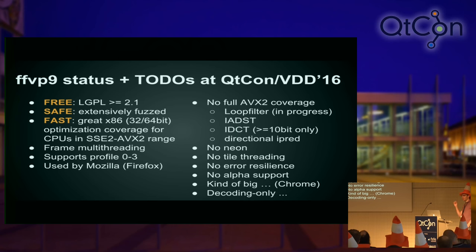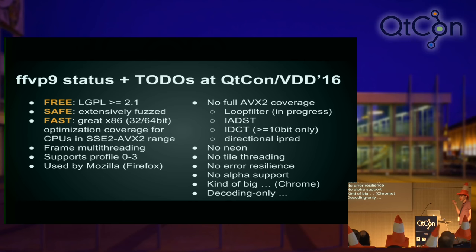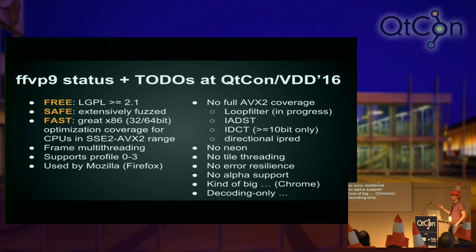Now that we have this decoder and it is so good, we're actually seeing user uptake. VP9, just like VP8, is a web codec — primarily streamed over the internet. The biggest market for a software decoder is your browser. FFP9 has been picked up by Mozilla as of a few months ago. They call it FFPX — it's sort of like the VP3, 8, and 9 decoders from FFmpeg ripped out into a library. We actually have a browser using FFP9 as a decoder, and as a community we should be proud of that.